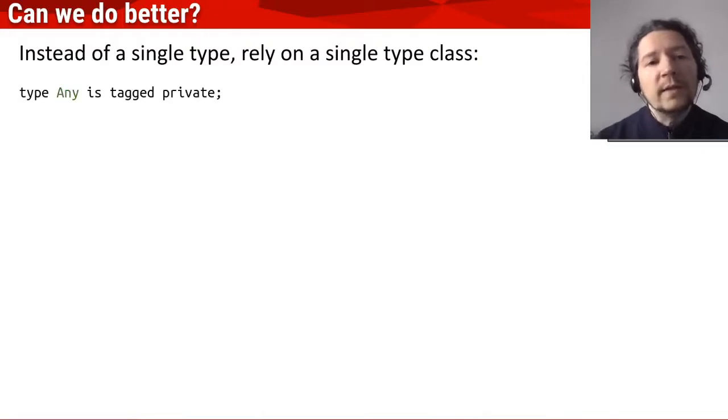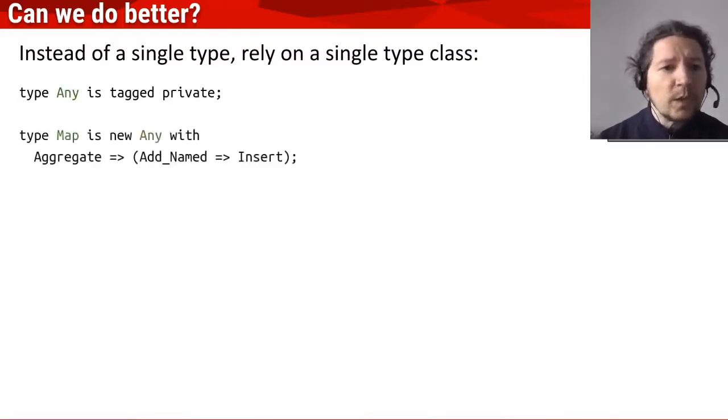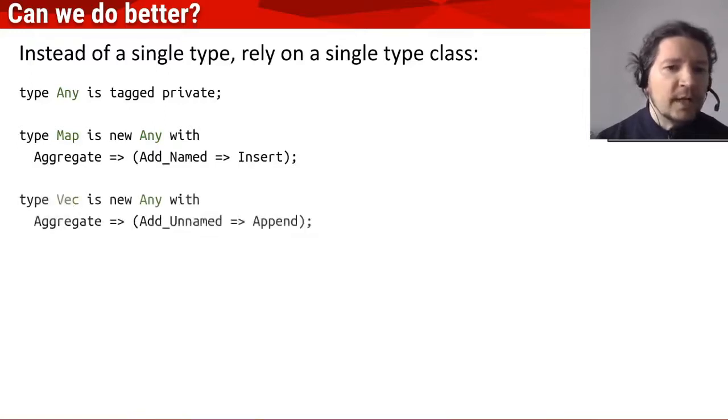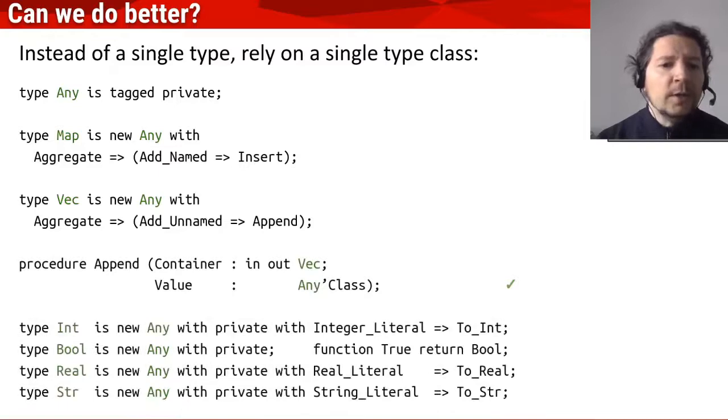And so we have the base class. We derive from here maps with their own initialization, vectors with their own initialization, as we know. And since we are doing this for vectors and maps, we can have own types for all the rest of the data types around.